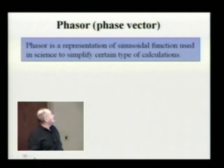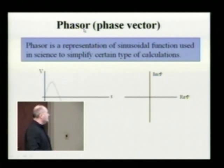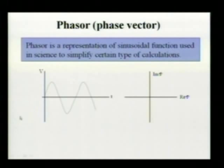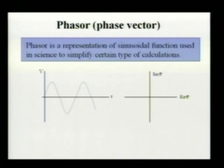Do not confuse phasors with phasers — a phaser is a gun used on Star Trek; phasor is spelled with an 'o' and phasor is spelled with an 'e'. So let's construct a phasor. The relationship between a phasor and the graph is similar to how the sine function is defined — we draw a circle, mark a line, and project that line on the vertical axis. A phasor is an arrow marked on a plane which rotates such that the projection of that arrow on the vertical axis is always equal to the value of the function.